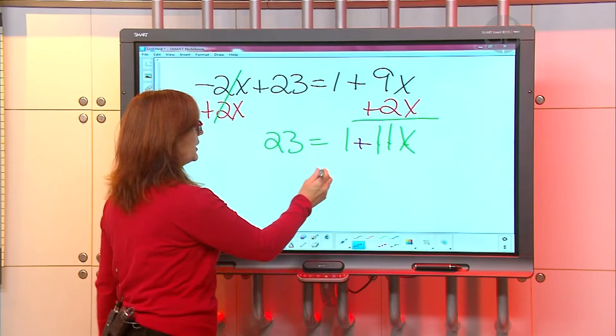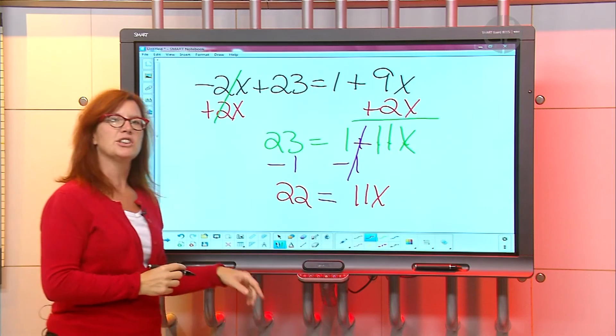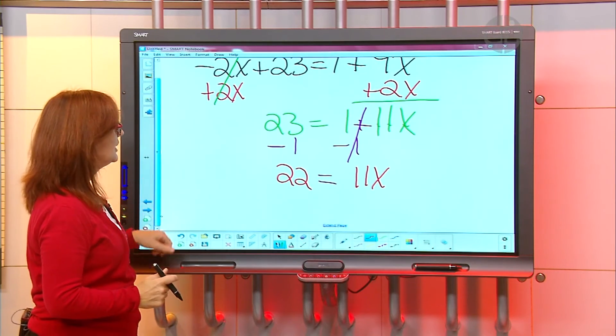We subtract 1. So we're gonna subtract 1 from the right side, but if we do it to the right side we got to do it to the left side, right? Awesome. So now what we have is 23 take away 1 is? 22. Great. And then we're gonna bring down the 11x and we still have 11x. Okay? So we're getting a lot closer. Way up here we had a whole bunch of, we had a big mess of a problem, and now when we come down here we're getting a lot closer to just having the x all by itself.